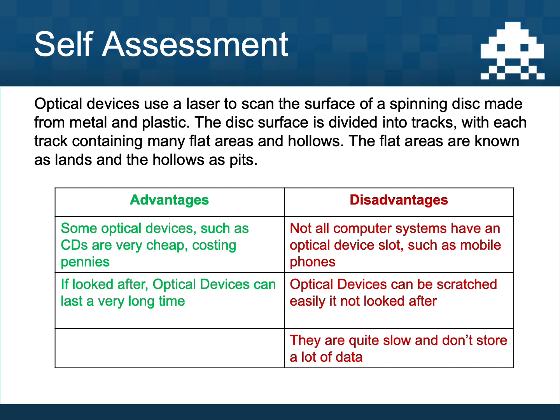Here's the sort of thing you might have come up with. The definition is copied from the previous slide. For advantages: optical devices such as CDs are very, very cheap — you can buy blank CDs for pennies, a pack of a hundred for a couple of pounds on Amazon. If you look after them they should last a very long time; put your CD in a case on a shelf and come back in a hundred years and it should still be okay.